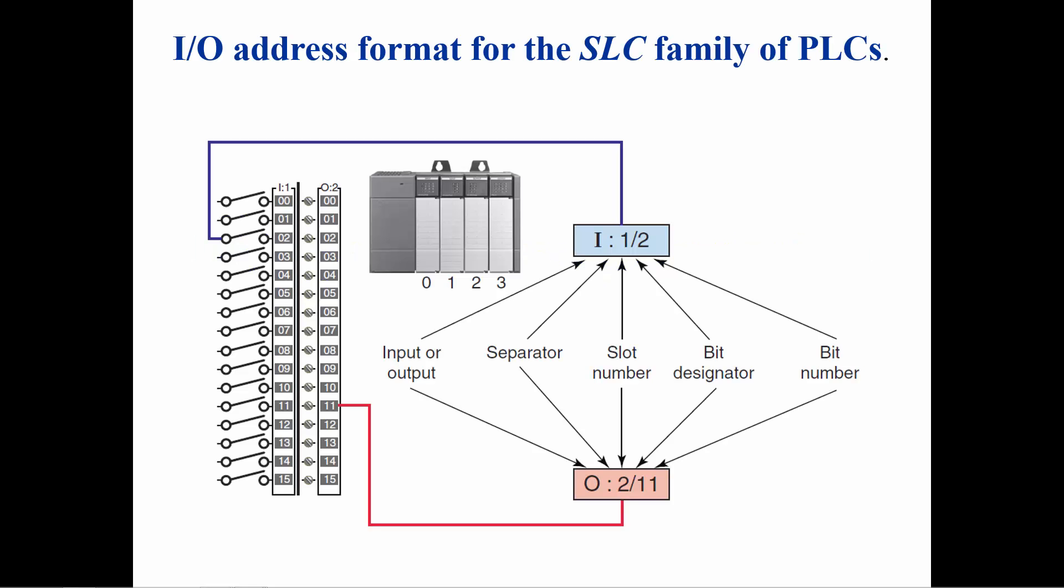The format for addressing with the SLC family of PLCs consists of letters, numbers and symbols that identify the physical location of the input or output modules. An input will have an I for the first symbol and an output will have an O followed by a colon.